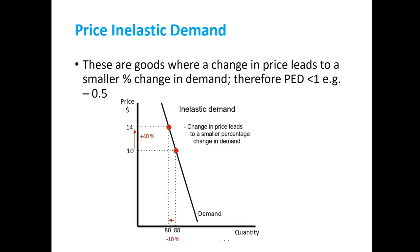Looking at the graph for inelastic demand, as price rises from $10 to $14, quantity demanded only decreases from 80 to 88 units. The percentage change in price is much larger than the percentage change in quantity demanded. The price elasticity of demand here is less than one, around 0.5, meaning demand is inelastic. Consumers will continue to buy roughly the same amount even when the price rises or falls. Goods with typically inelastic demand include necessities like basic food items or certain medications.